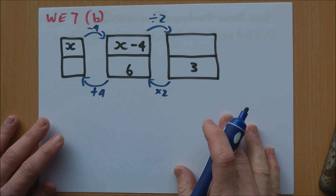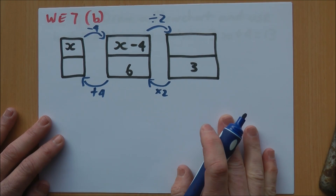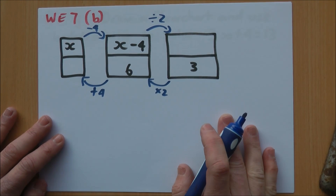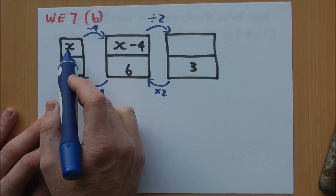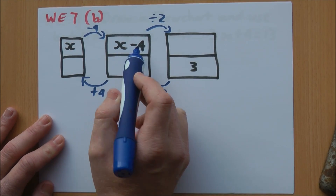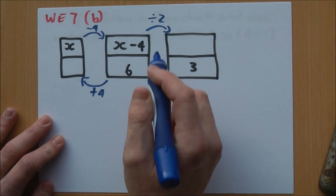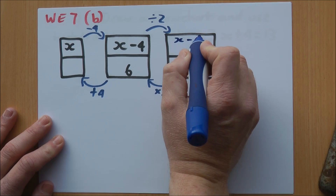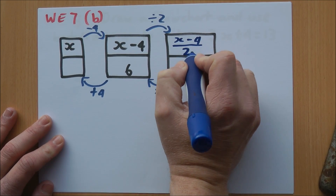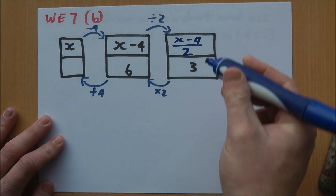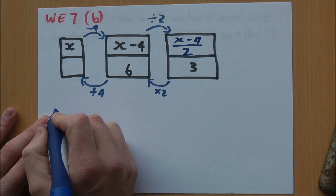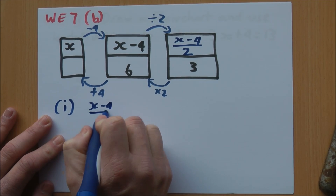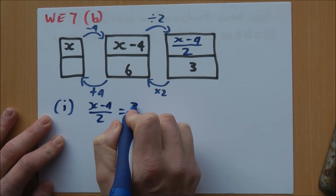Part B, same questions: write down what the equation is, and write down the solution. We're starting with x and we're subtracting 4 to get x minus 4. We're then dividing all of that by 2, so we have x minus 4 divided by 2. And I know that equals what's in the box below. So part 1, my equation is: x minus 4 over 2 equals 3.